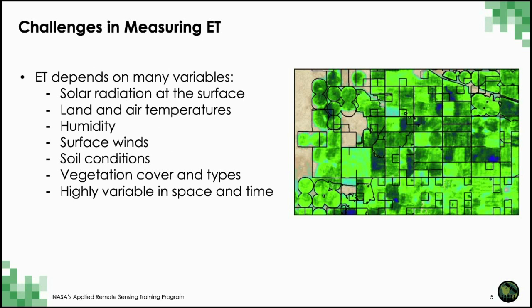However, it is challenging to measure ET. It is highly variable in space because it depends on many variables including solar radiation at the surface — the energy required to evaporate water — land and air temperatures, humidity, surface winds, soil conditions, and vegetation cover and types. Measuring ET is therefore estimated from combinations of observations and models.